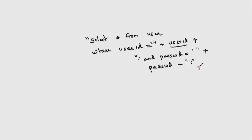If the user types instead of a real user ID something like x, y, z followed by a quote and two dashes, then the whole query that gets executed is just SELECT * FROM user WHERE user_id = 'xyz'. After that, everything is commented out, so the password is not checked at all. This is an example of authentication bypass using SQL injection — one way in which you can bypass authentication.